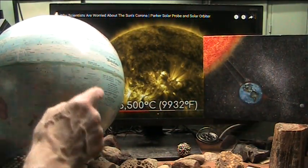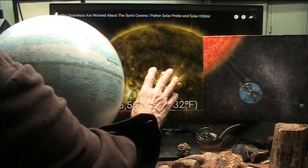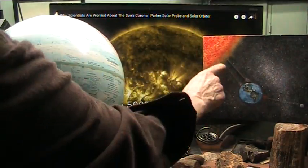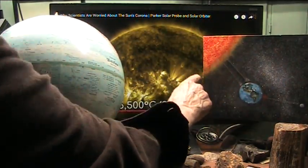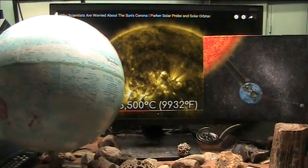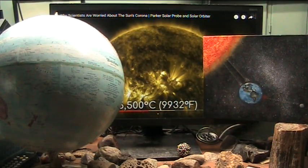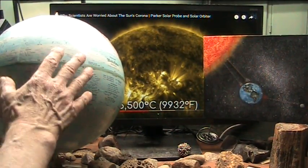And the same thing happens on Earth. So on the surface, 6,000 degrees, out at the solar corona, millions. They can't figure this out. I think it's just unbelievable. Now, on the Earth, the exact same thing.